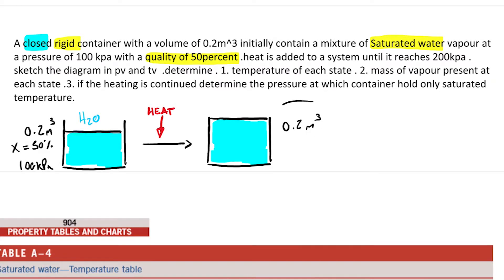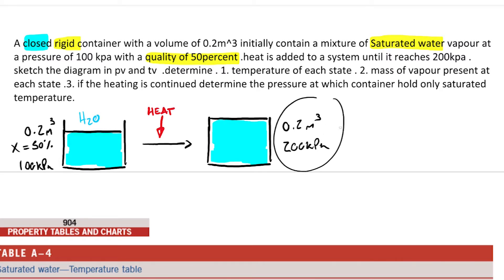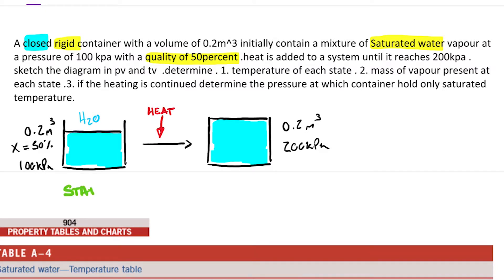For the second state, we know the volume is fixed and the pressure is 200 kilopascals. We have everything needed to figure out where we are in the second state, because we know the specific volume from the first state and we also know the pressure. So let's start with the first question: what is the temperature of each state? I'll call this state one and this state two.